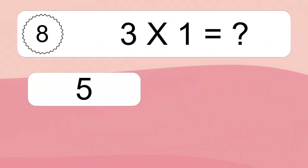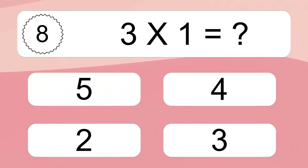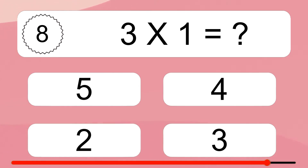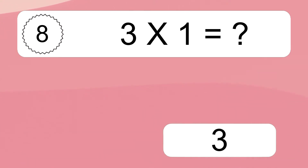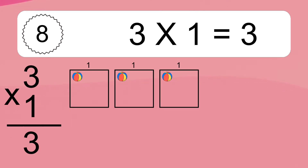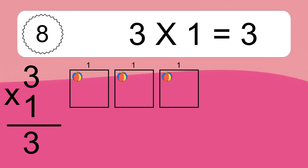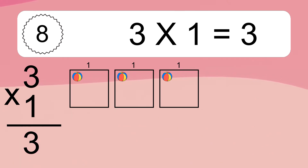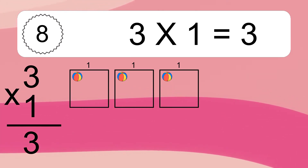3 times 1 equals what? 3 times 1 equals 3. We have 3 boxes, and each box has 1 colorful ball inside. If you count all the balls in all the boxes together, you will have 3 times 1 balls. This equals 3 balls.